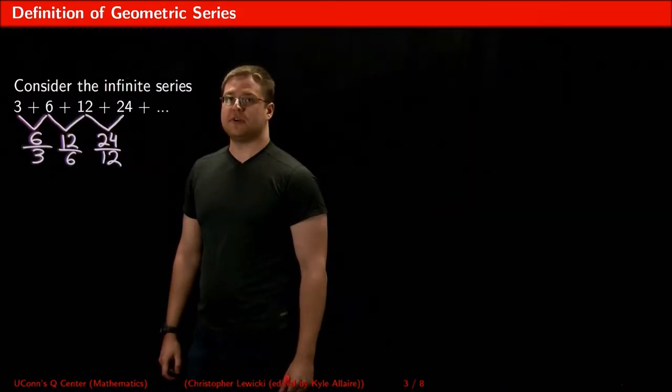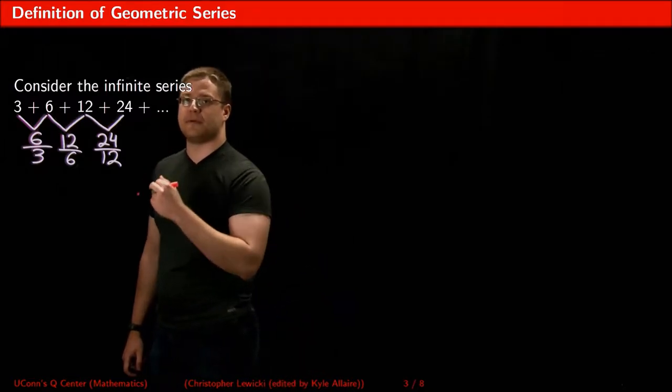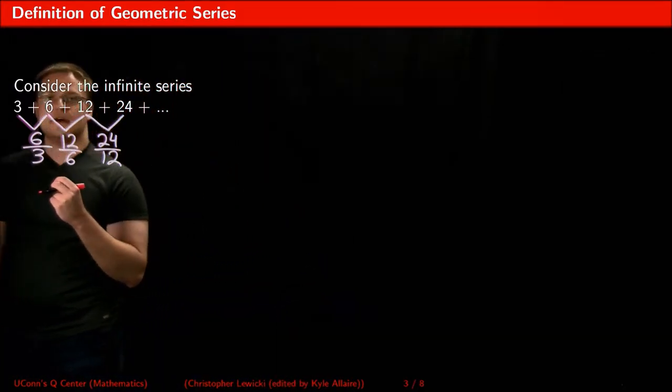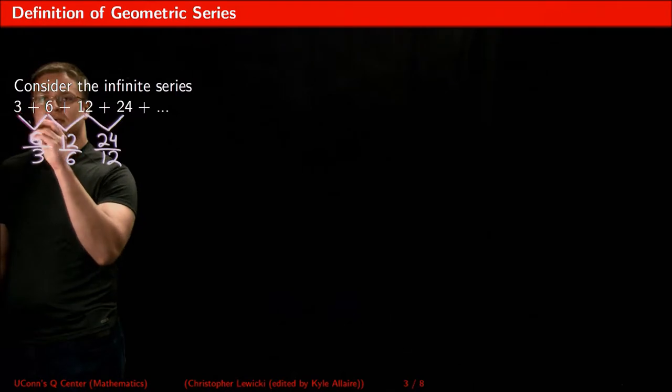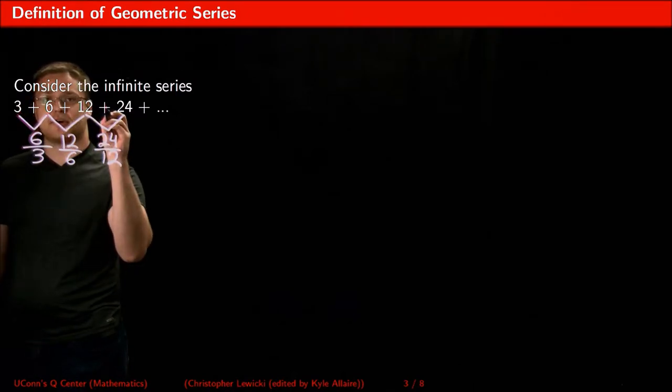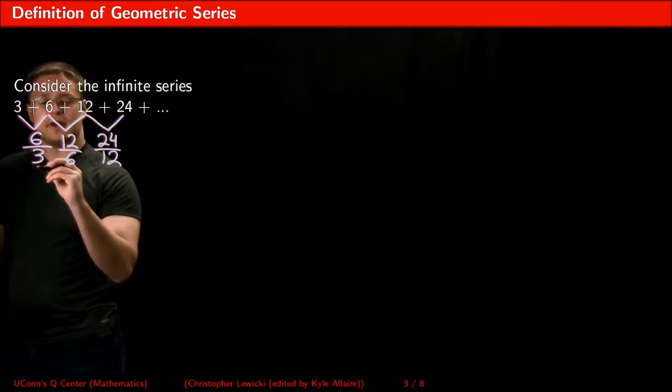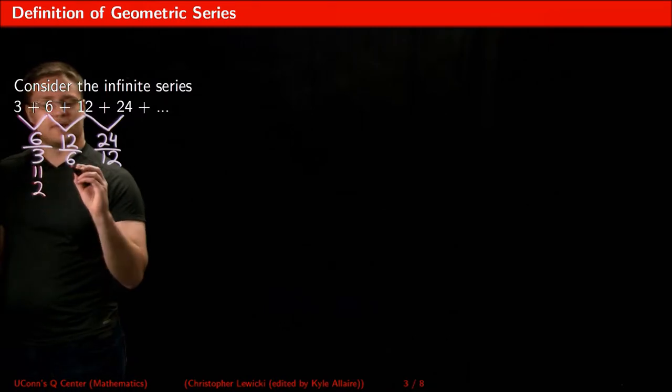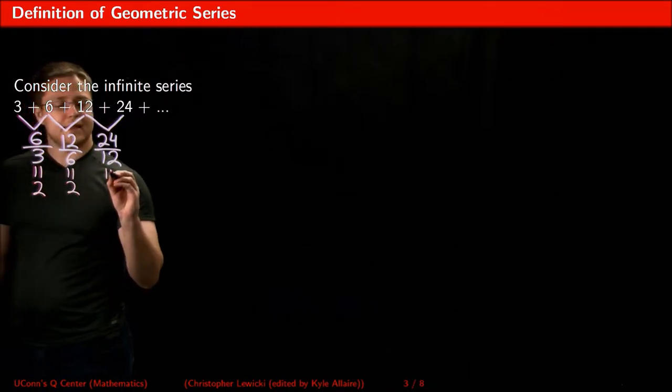To help you understand what a geometric series is, let's take a look at this example. Notice what I did was I set up ratios between every pair of consecutive terms. When I simplify these ratios, every time I get the same number.